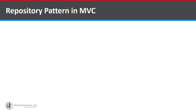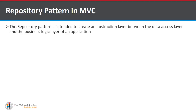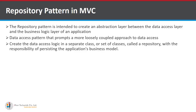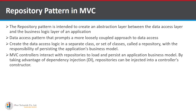Next is the Repository Pattern in MVC. A repository creates data access logic in a separate class with the responsibility of processing the application's business model. The repository pattern is a layer between the data access layer and the business logic layer. It is intended to create an abstraction layer between them, promoting a more loosely coupled approach to data access. MVC controllers interact with repositories to load and process the business model by taking advantage of dependency injection — the repository can be injected into a controller's constructor.